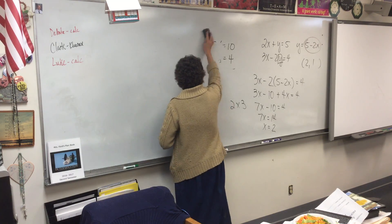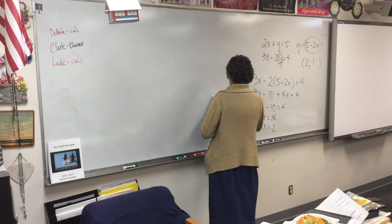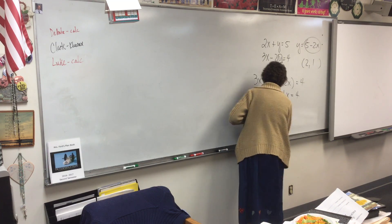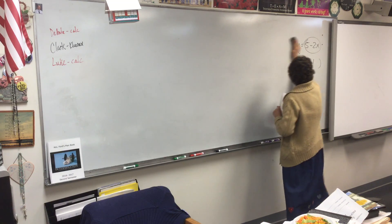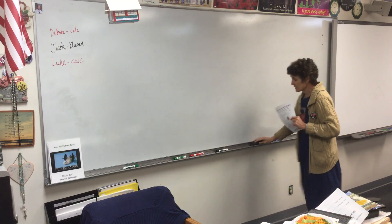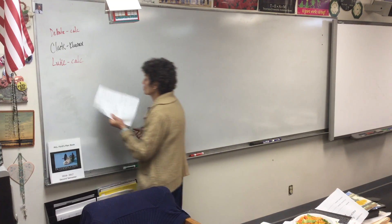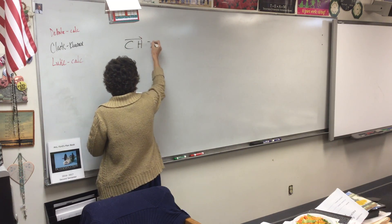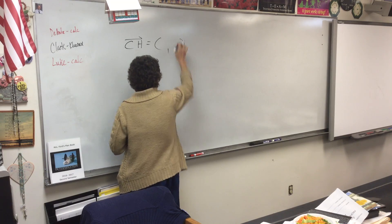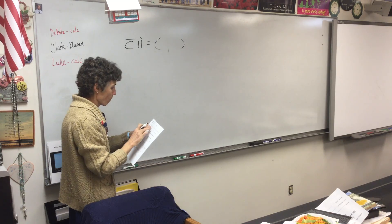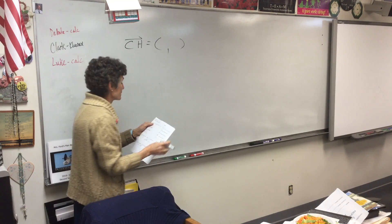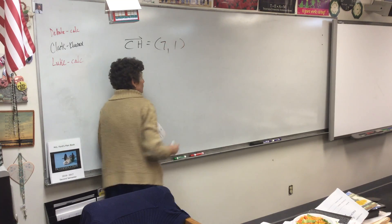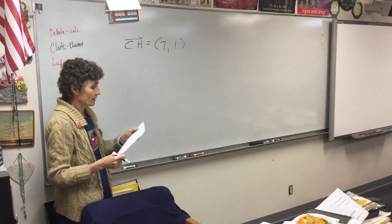We are finding the coordinates of the vector from C to H. So the coordinates of vector CH, what would those coordinates be? From C to H, that would very simply be what? Seven, one. Seven, one. From C to H, seven, one.